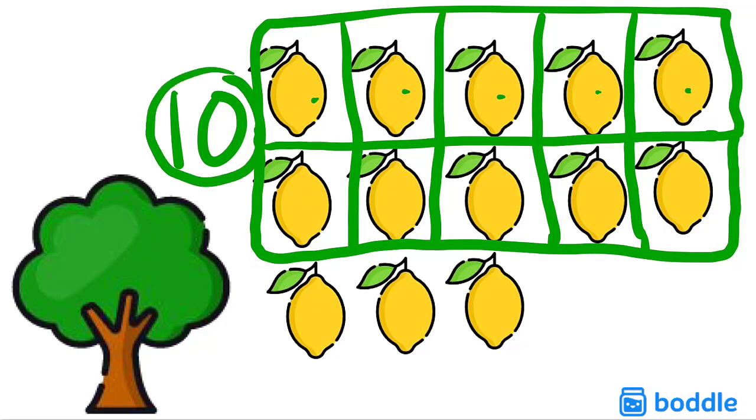Well, if I know that I have a group of 10, I can keep counting on from that number, from that number 10 right here. I can count on to the next number after 10 until I run out of lemons. So then it'll tell me how many lemons I have.